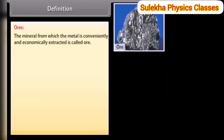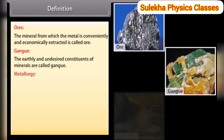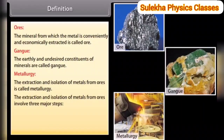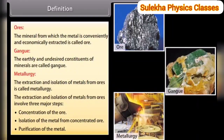Definitions. Ores: the mineral from which the metal is conveniently and economically extracted is called ore. Gangue: the earthly and undesired constituents of minerals are called gangue. Metallurgy: the extraction and isolation of metals from ores is called metallurgy. It involves three major steps: concentration of the ore, isolation of the metal from concentrated ore, and purification of the metal.